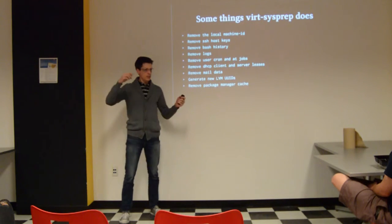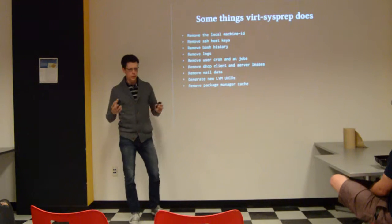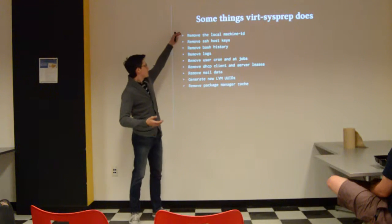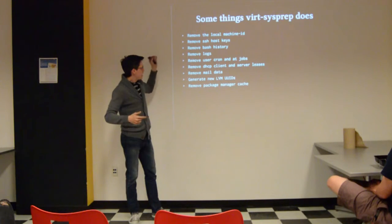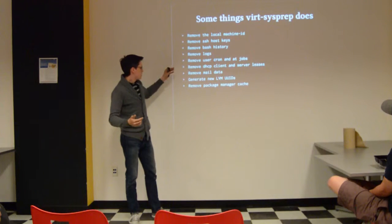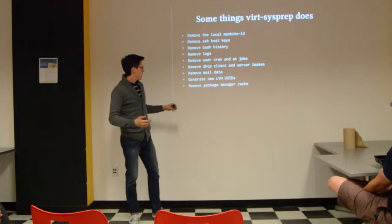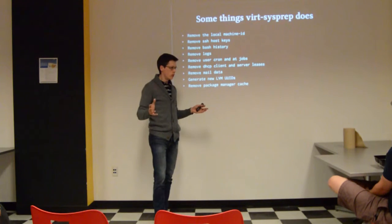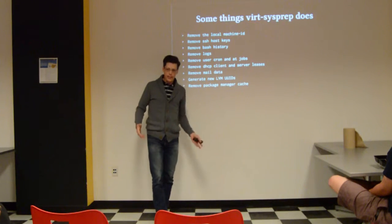Virt-sysprep has a lot of different operations it can do, and some are enabled by default, some you can turn on. For example: remove the machine ID so it gets regenerated on the next boot, removes host keys, history, logs, some cron jobs, DHCP things, mail. It also changes some UUIDs for LVM and empties some caches. It can understand the most mainstream Linux operating systems and find all of this by itself.